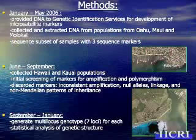From the timeline: in January we started contracting for the development of microsatellite markers, which took until almost June — it's notoriously difficult for algae. This company had actually had no success developing markers for a couple of other species. During that time, we collected field collections and started to sequence a subset of the extracts we had already obtained. We also sequenced some samples we had from Okinawa, Australia, and Guam. We started testing the markers in June for polymorphism and amplification, discarding ones that were inconsistent or exhibited null alleles, linkage, or non-Mendelian patterns. And from September through the present, we're still working through all of the data analysis.